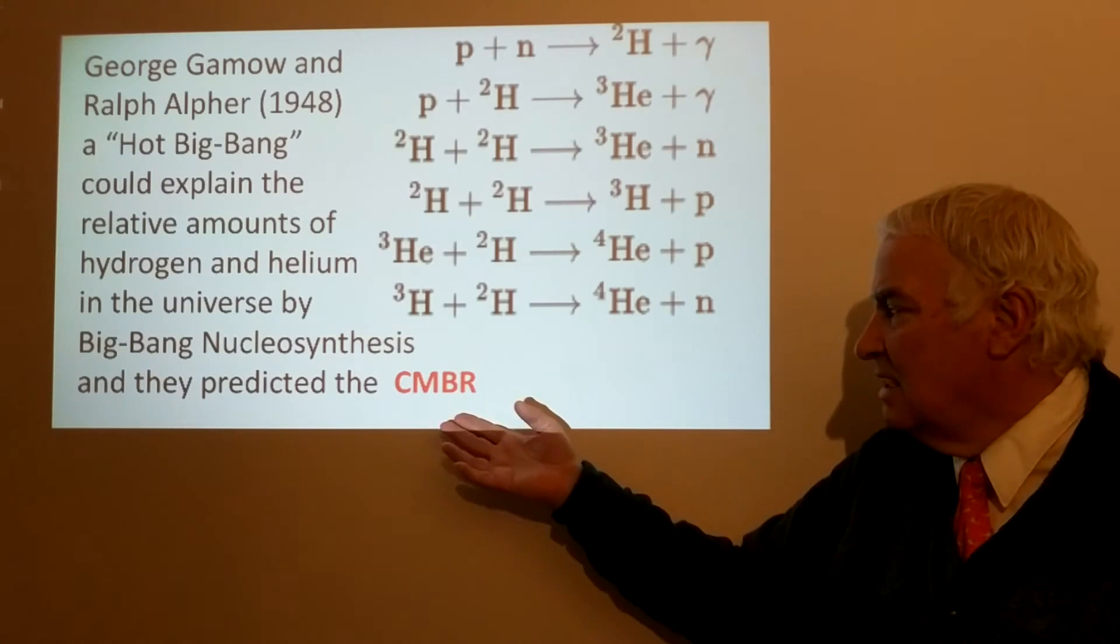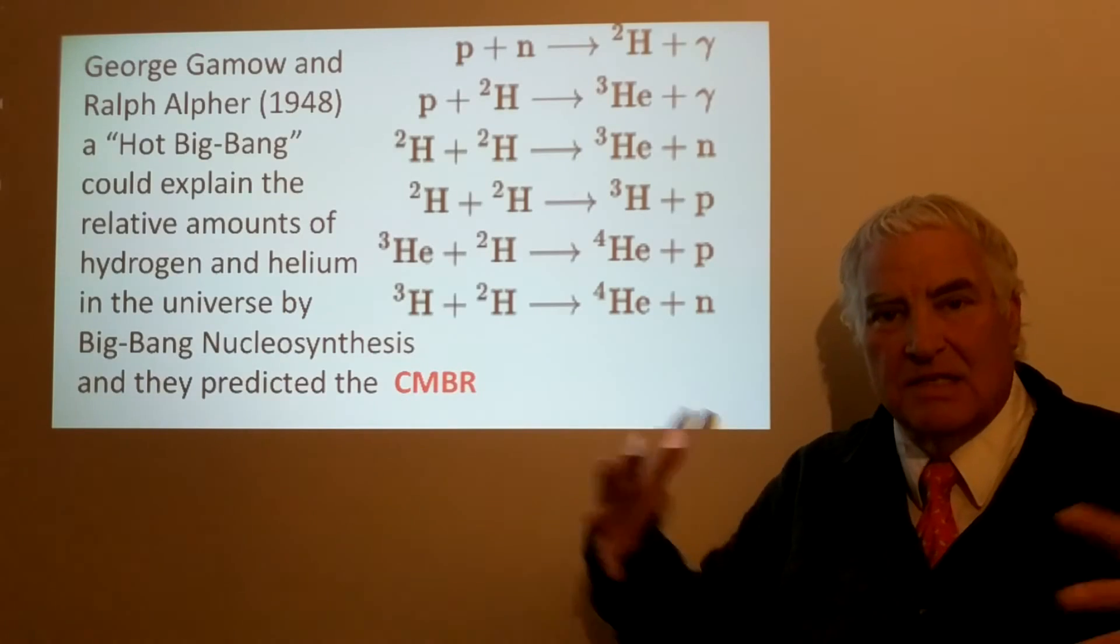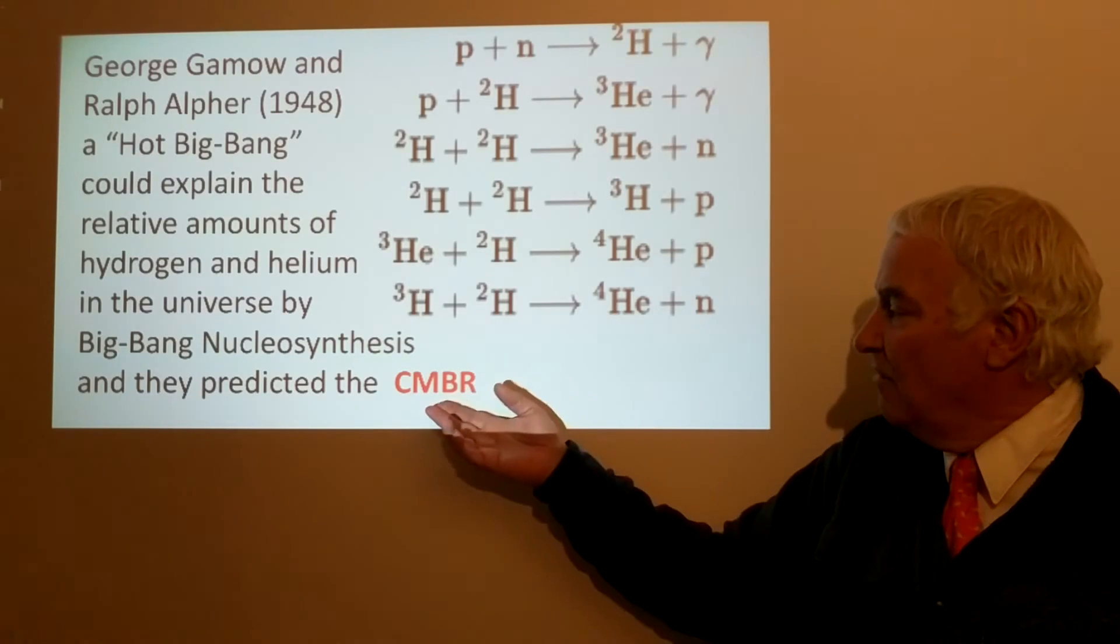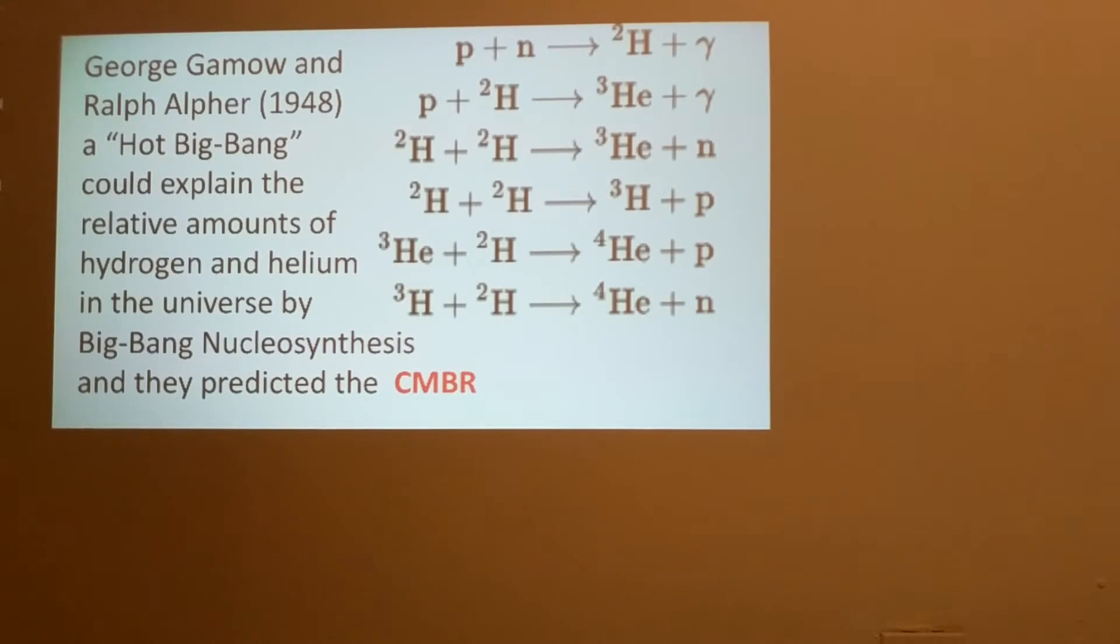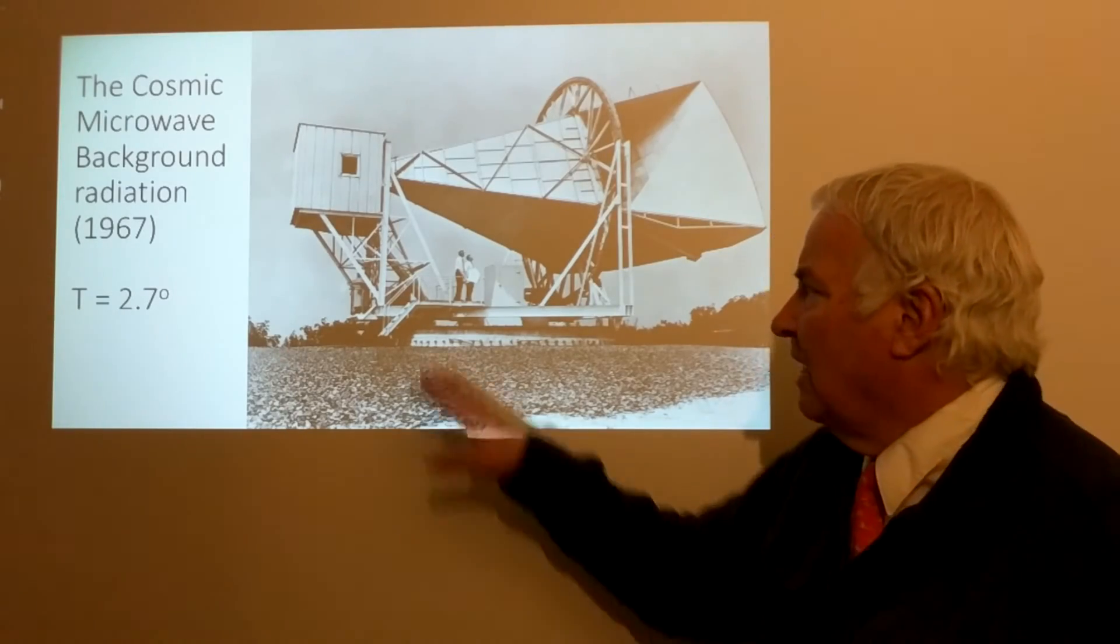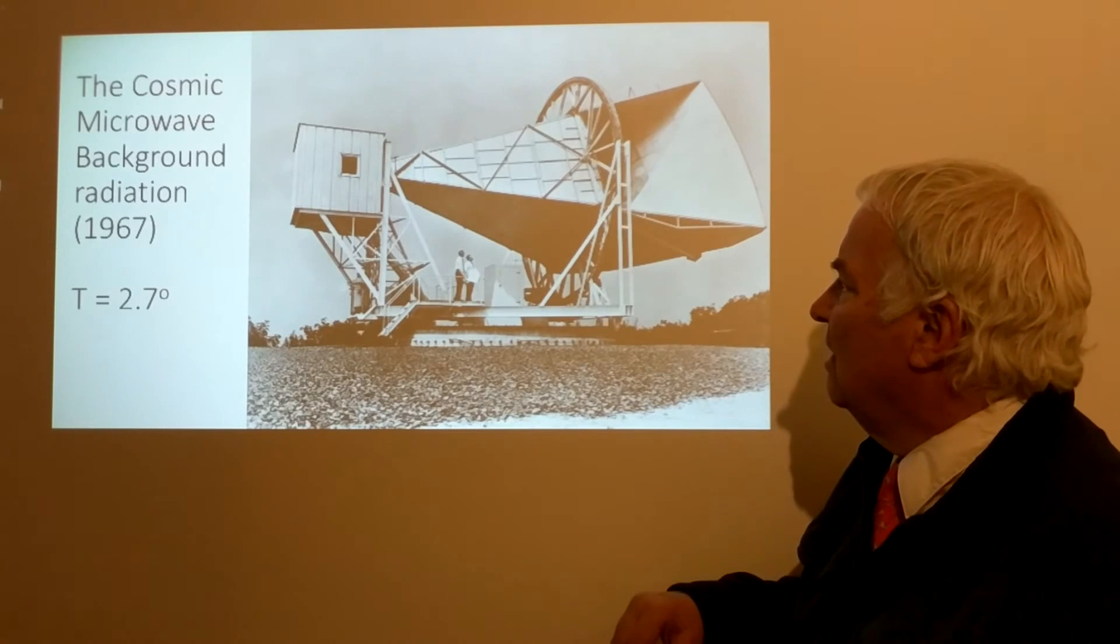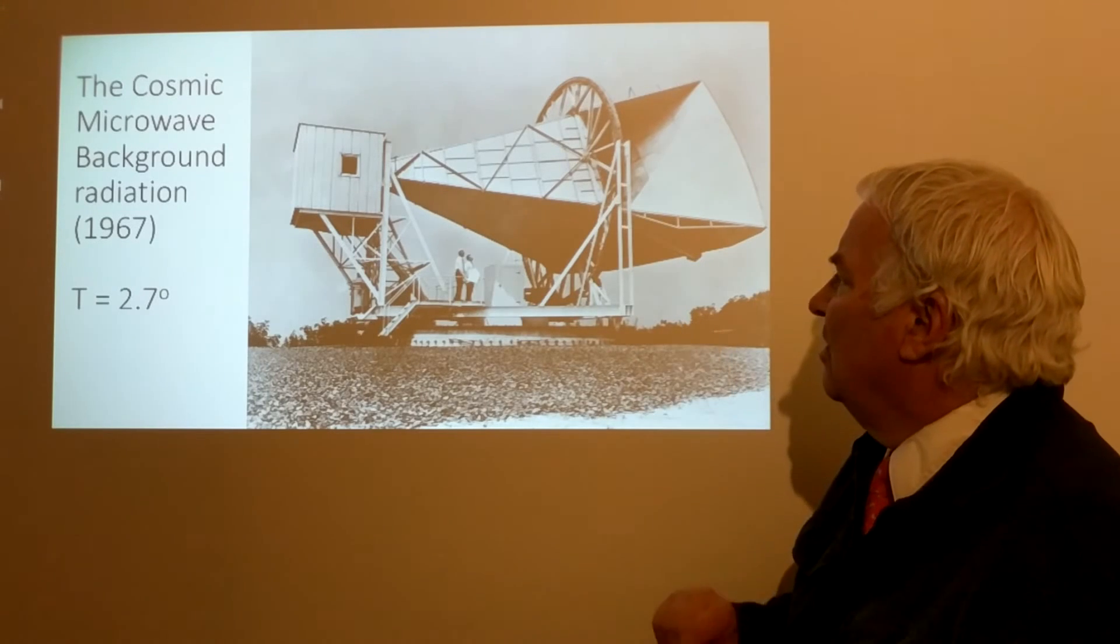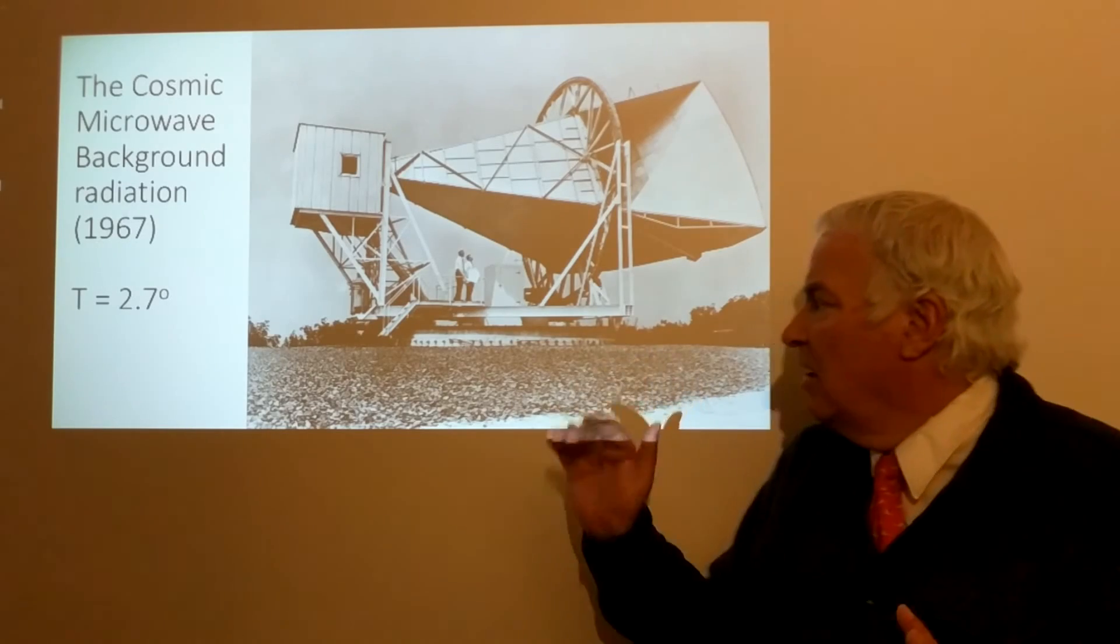When the universe was small and hot, it expanded and is still expanding, and that means it will have a much colder temperature today. That cold temperature could be measured, and this was predicted and found. Penzias and Wilson in about 1967, using this radio telescope in the United States, did not know about the prediction of George Gamow but were trying to measure what kind of signals were coming from sources in space.